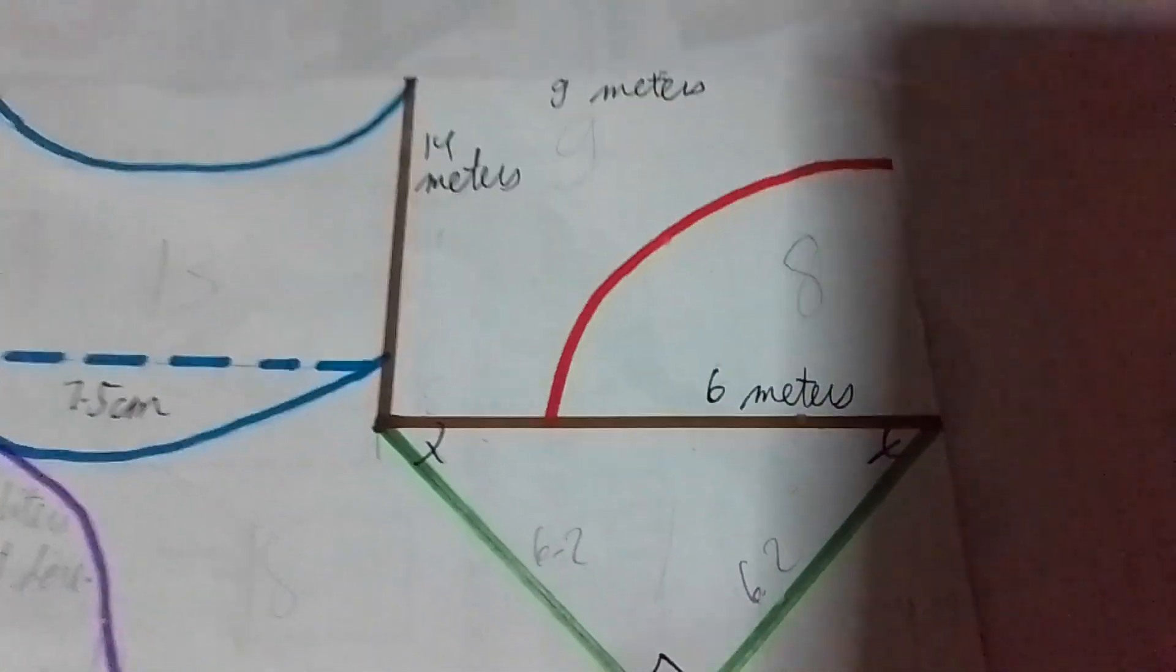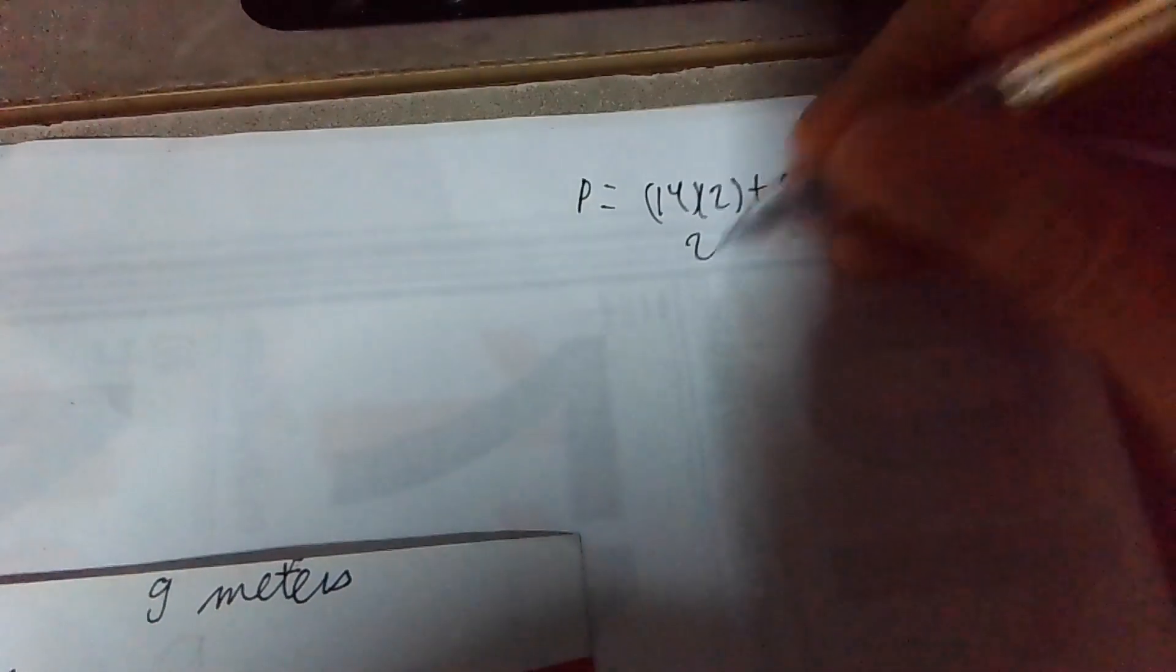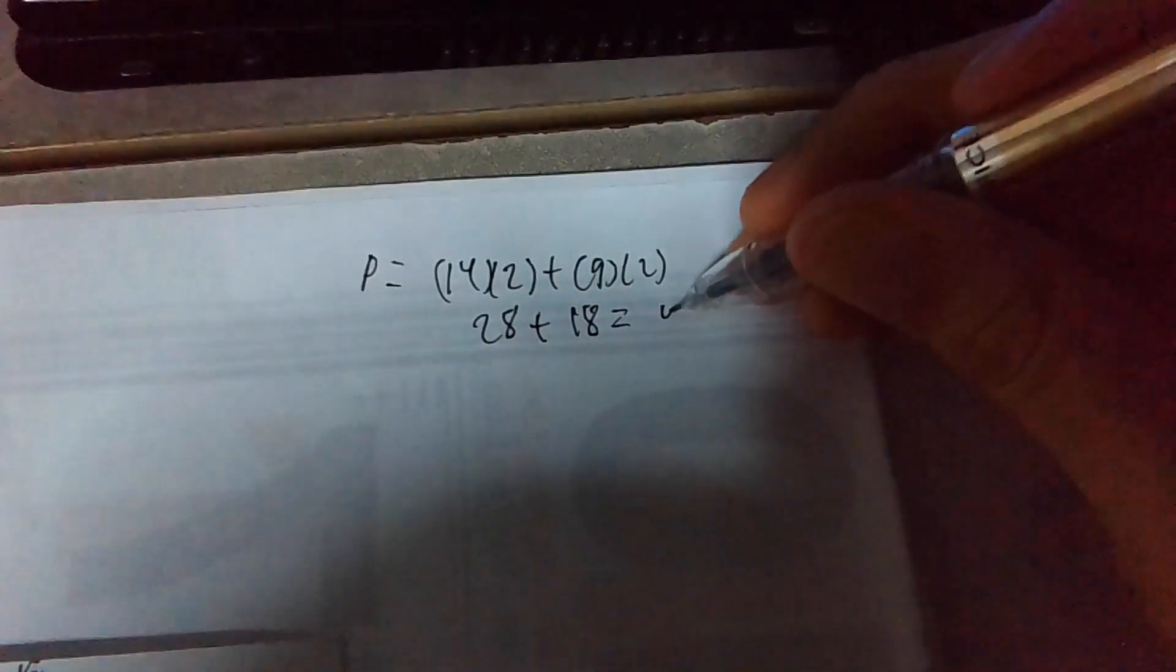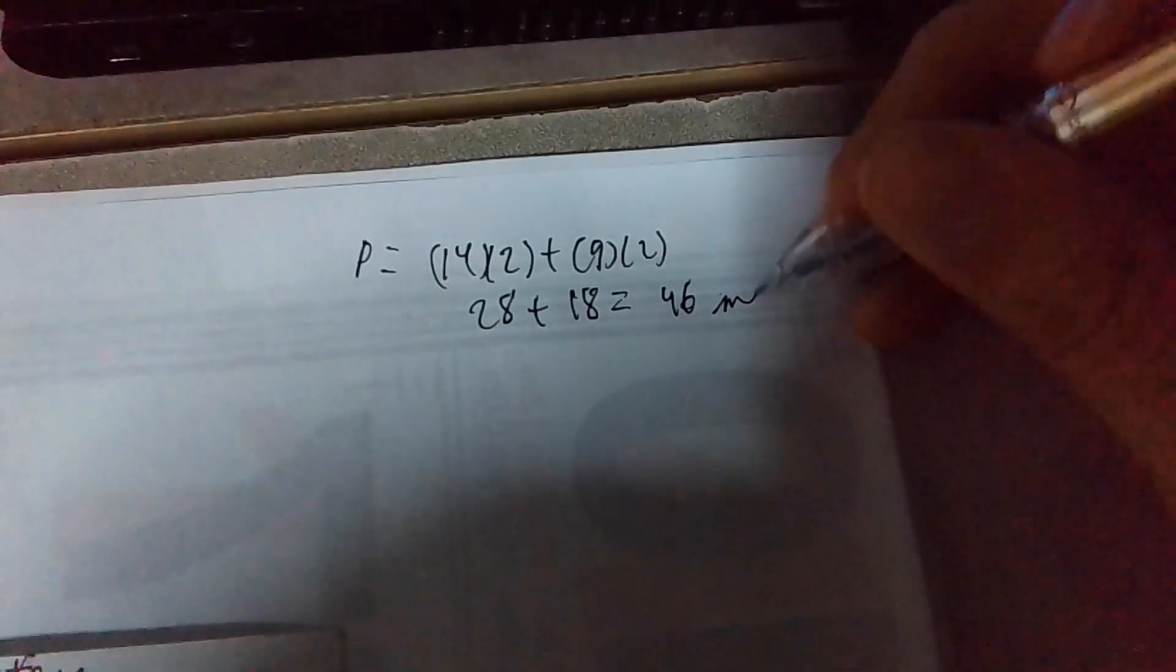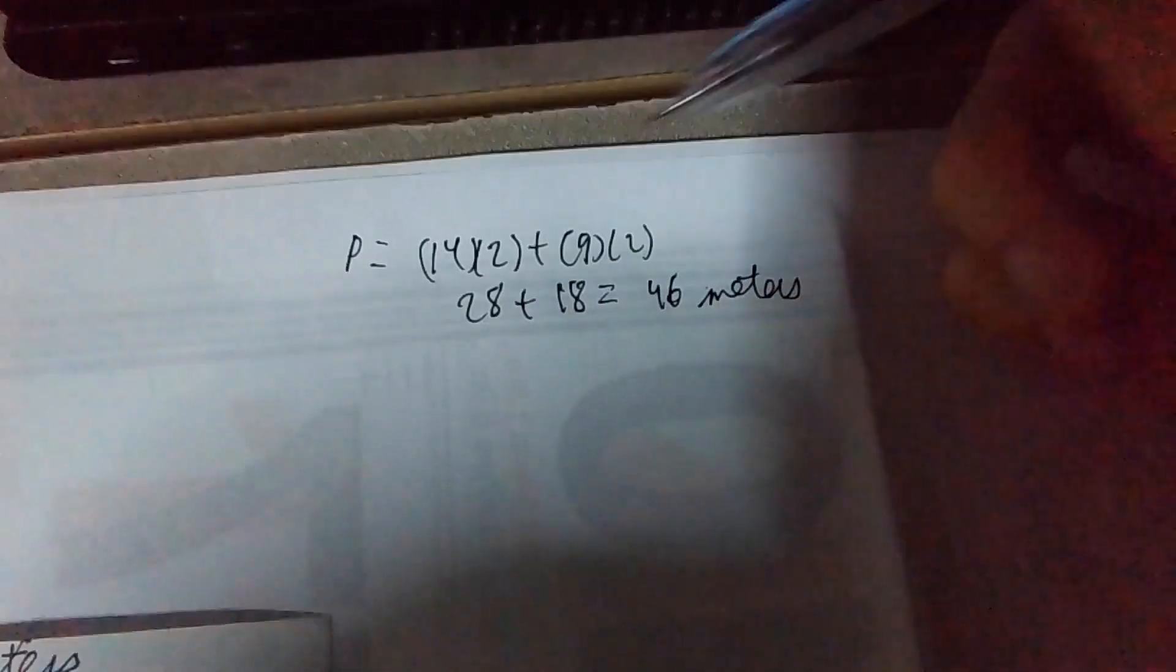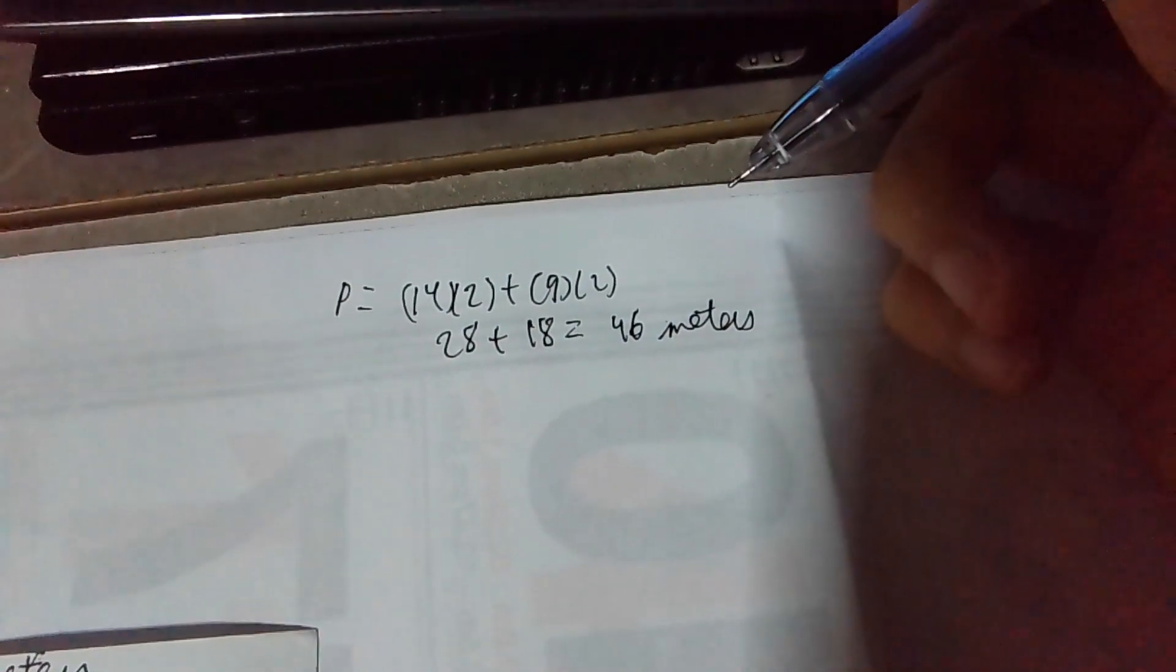Therefore, it's 14 times 2 plus 9 times 2. 14 times 2 is 28, 9 times 2 is 18. Therefore, the perimeter of this figure is 46 meters. That's the perimeter of the figure.